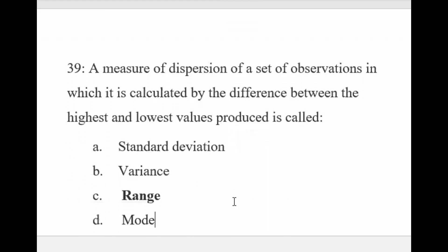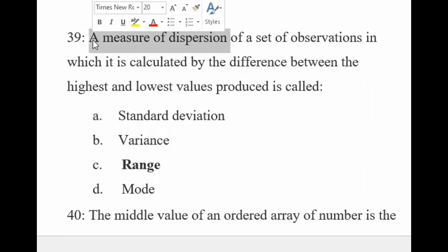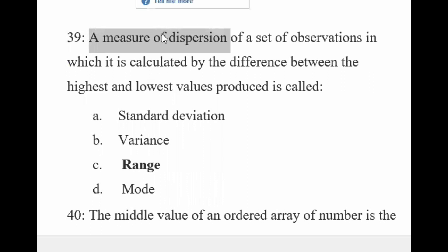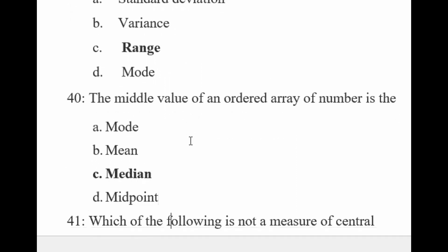The measure of dispersion of a set of observations calculated by the difference between the highest and lowest value is the range. The middle value of an ordered array of numbers is called the median.